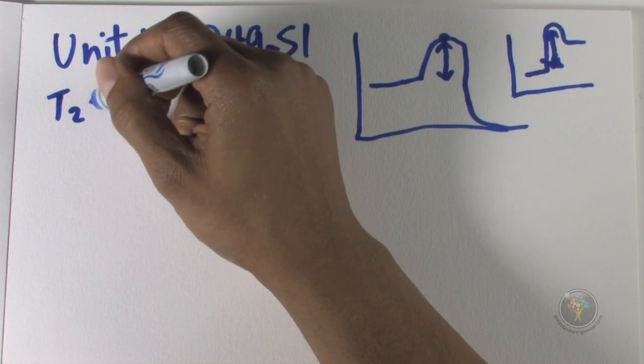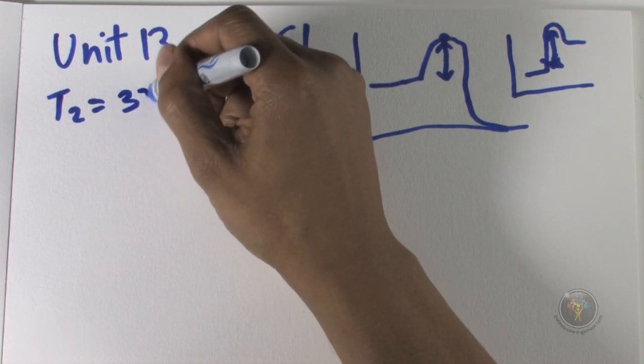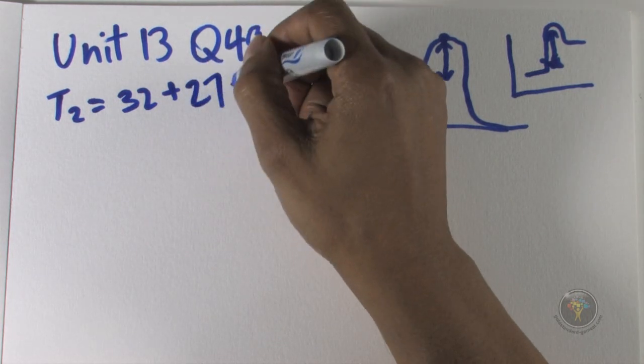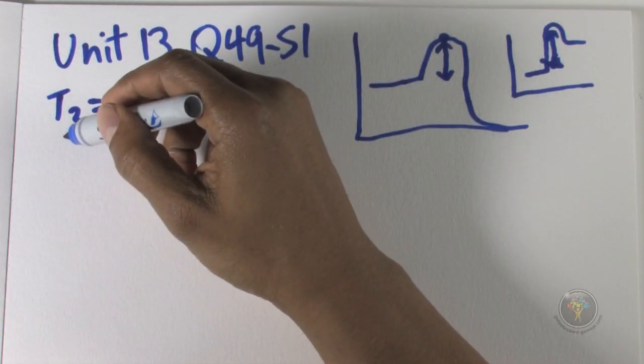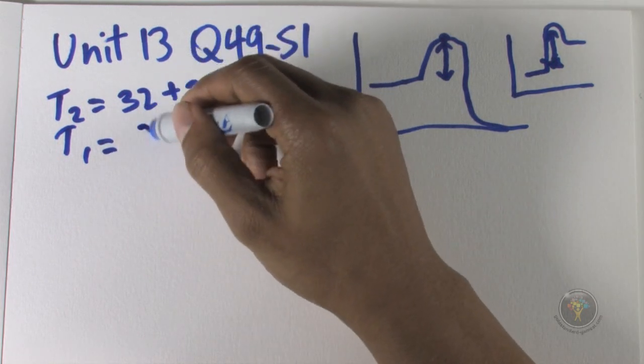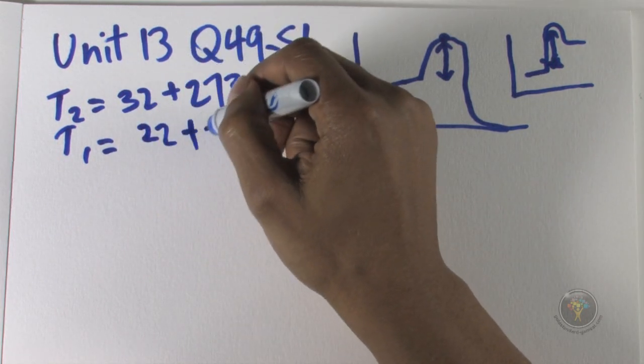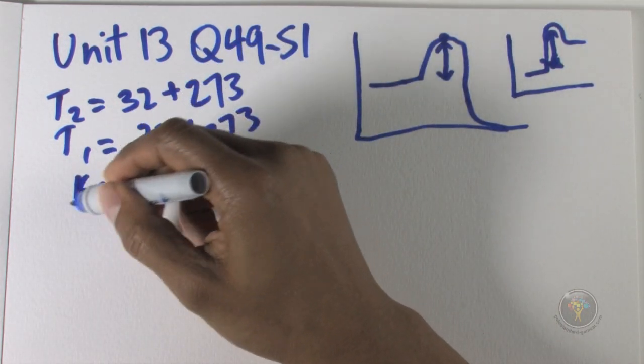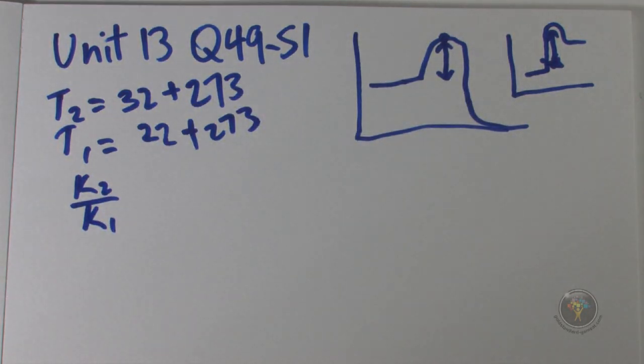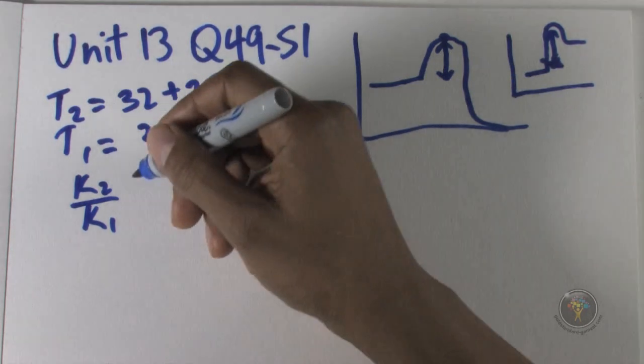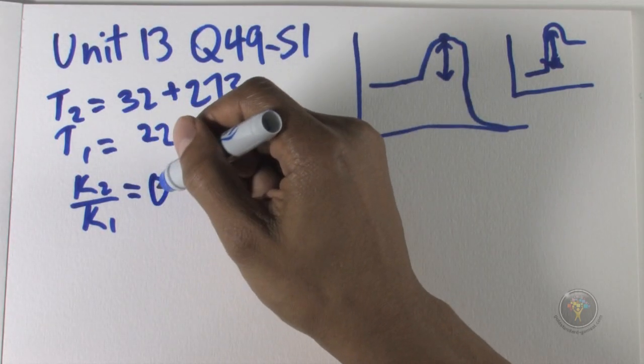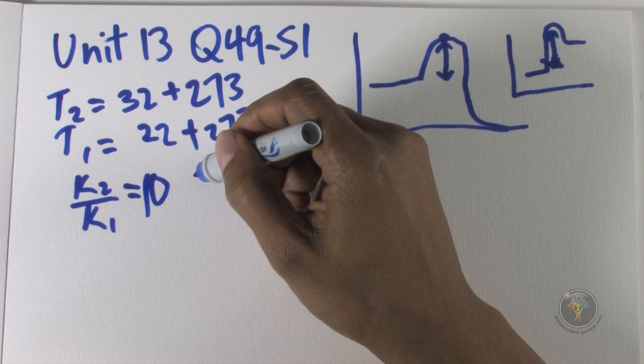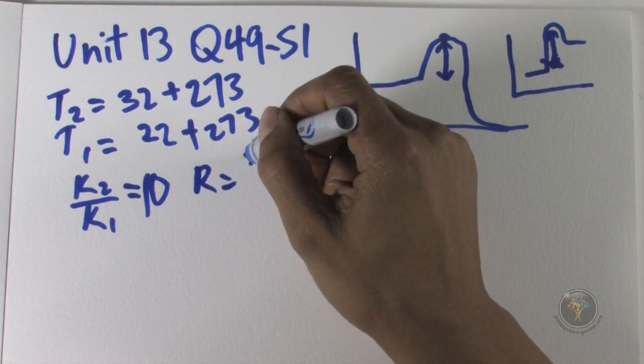First we notice that the temperature T2 is equal to 32 plus 273 to be in Kelvin. T1 would be 22 plus 273. Then we have the ratio of the constants k2 over k1, because we're told that the rate of reaction increases by a factor of 10. Here's our factor of 10. We have the gas constant which is 8.3.